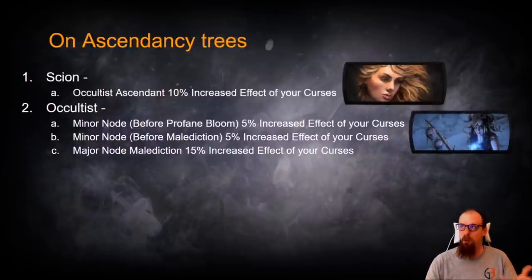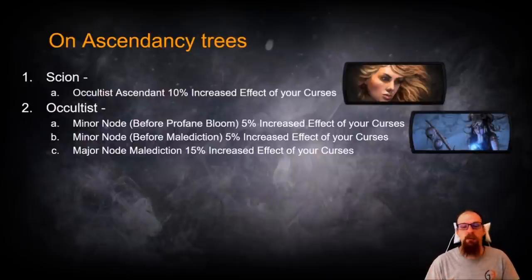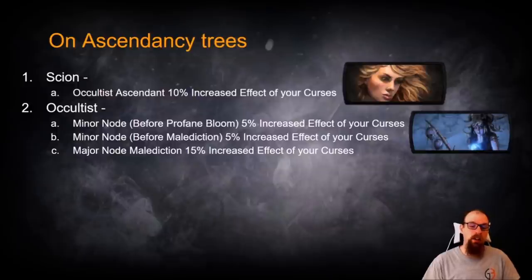I mean, 10% out of what would normally be 40%, just as a flat availability on the regular passive tree, is about a, what, 25% increased power of the level of your curses. So that's something that's mentionable, but really it's not broken or overpowered. It's relatively balanced.